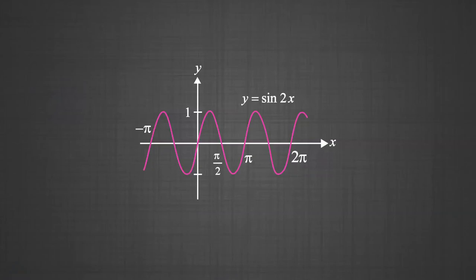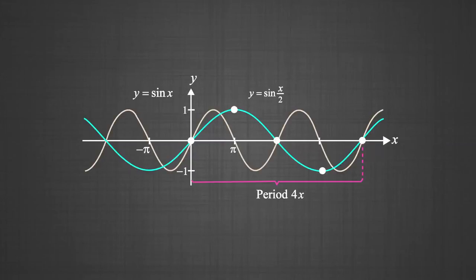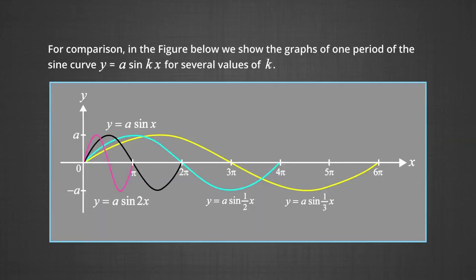On these three graphs, graph 1 shows y = sin(2x), graph 2 shows y = sin(x/2), and graph 3 shows a comparison of these two. For further comparison, we draw four different functions on the same sheet: the black line represents y = sin x, the pink line represents y = sin(2x), and the blue line represents y = sin(x/3), so we can compare all four graphs on the same graph paper.